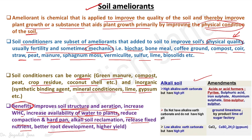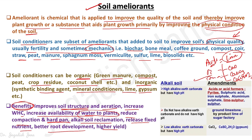If the soil is acidic in nature, the amendments we use include lime — a broad term that consists of calcium oxide, calcium carbonate, calcium hydroxide, basic slag, and dolomite. These are examples of lime. We will talk later about calcium carbonate equivalent, how to calculate liming efficiency, neutralizing index, and neutralizing value.